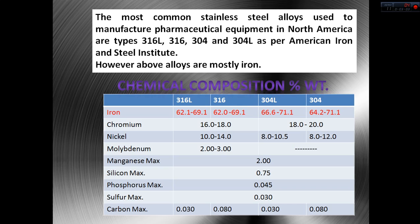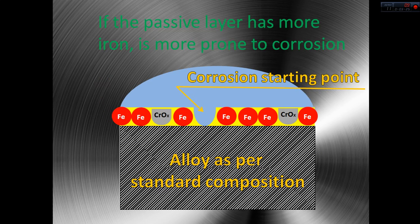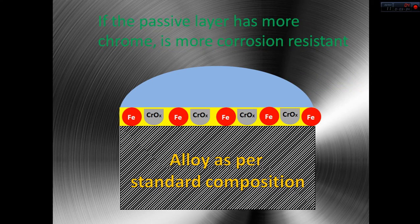No matter what kind of stainless steel we are using, it is mostly iron, and this is why we want to passivate it. The corrosion resistance is given by a protective layer on the surface. This layer is just a few atoms thick and will have mostly iron and chromium. If the layer has more iron, the surface is more prone to corrosion. But on the other hand, if the layer has more chromium oxide, that surface will be more corrosion resistant — no matter if we are still talking about the same bulk material composition.